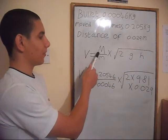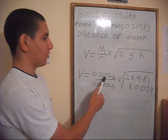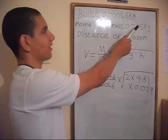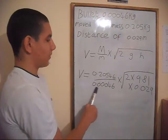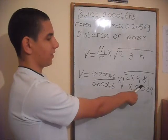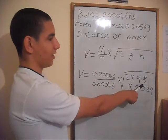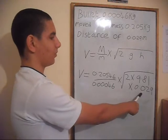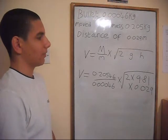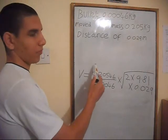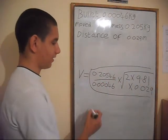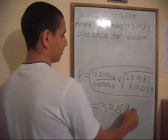We get the mass that was moved up, which is 0.20546 kilograms — that's the mass of the block plus the mass of the bullet. Divide by the mass of the bullet, times by 2, times by the gravitational field strength 9.81, times by 0.029 metres — the height that the block and bullet were moved up. So when we put all of this into a calculator,